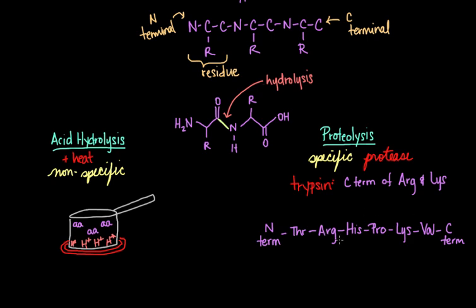Here we have an arginine. This would be considered the C-terminal of arginine since it's closest to the C-terminal of the polypeptide chain. So we would get cleavage here. Likewise we would have cleavage on the C-terminal of this lysine residue here. With this particular polypeptide chain, you would end up with three different fragments after the addition of trypsin, since it cleaves in these very specific places.